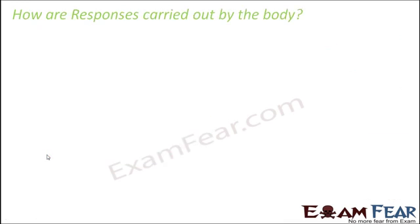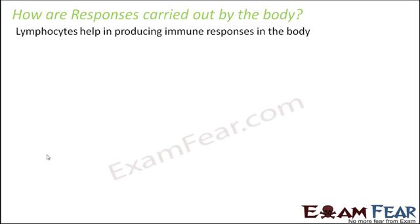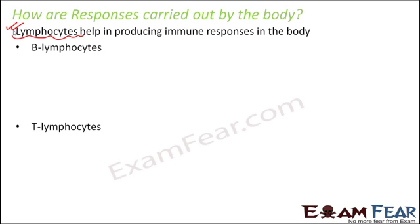Now the question is how are these responses carried out by the body? What are the cells that create these primary and secondary responses? Lymphocytes help in producing immune responses in the body. There are two types of lymphocytes: B lymphocytes and T lymphocytes, which perform two different functions that coordinate to provide the primary and secondary responses.